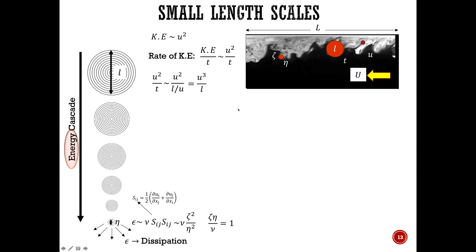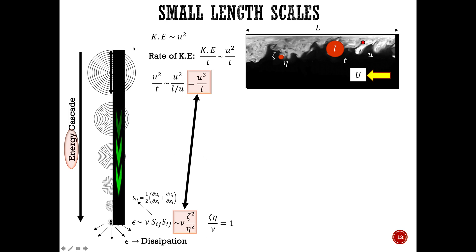The first expression is the rate of kinetic energy at which the largest eddies break down to smaller eddies, and the second is the rate at which the smallest eddies are dissipated by viscosity. To achieve equilibrium — no energy accumulation — these two rates must be proportional to each other. The rate of energy reduction at the large scale must equal the rate of dissipation at the small scale.